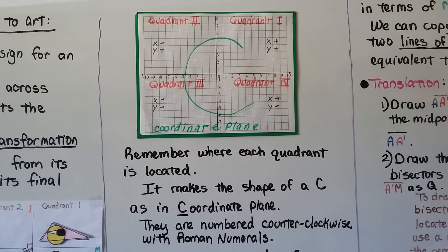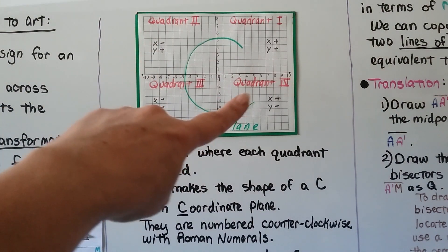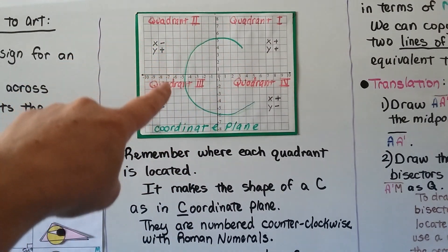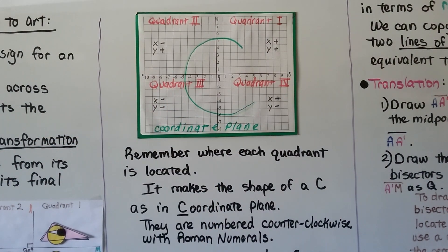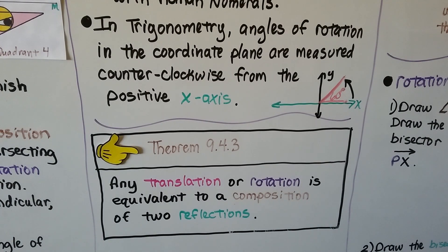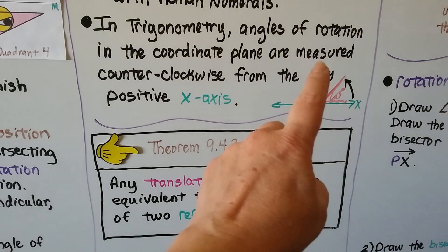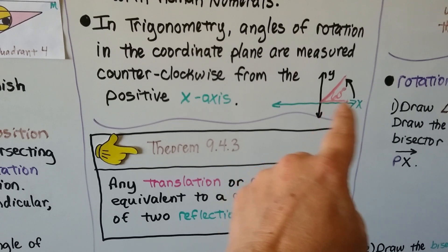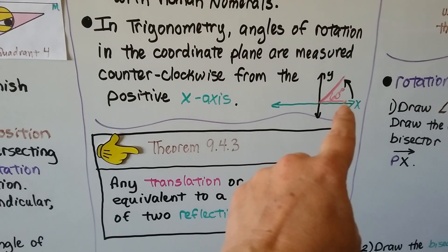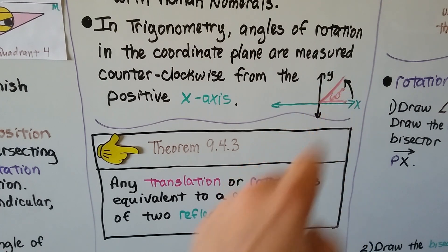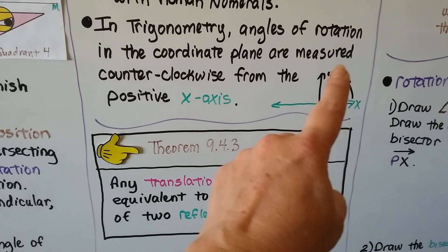Remember where each quadrant is located: it makes the shape of a C, as in coordinate plane or Cartesian plane — starts at quadrant 1, makes the shape of a C going 2, 3, 4. They're numbered counterclockwise with Roman numerals. In trigonometry, angles of rotation in the coordinate plane are measured counterclockwise from the positive x-axis, so a 60-degree angle is measured going that way from the positive x-axis.